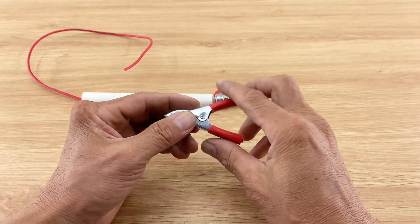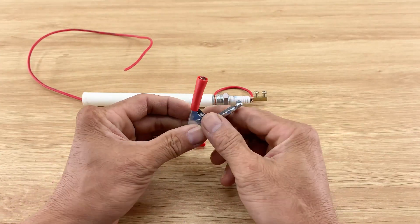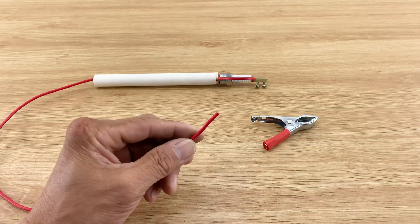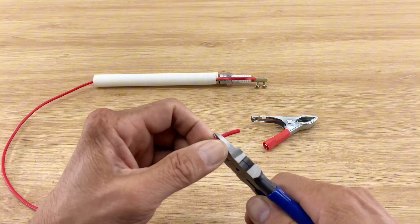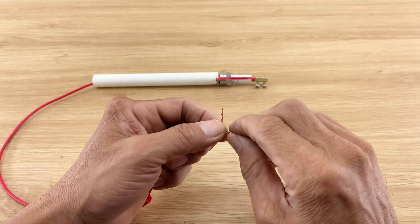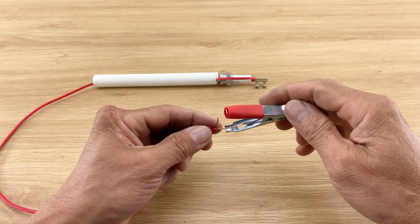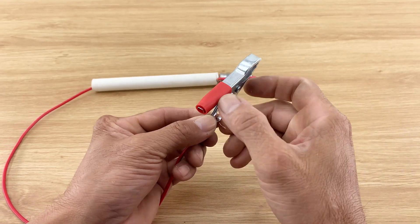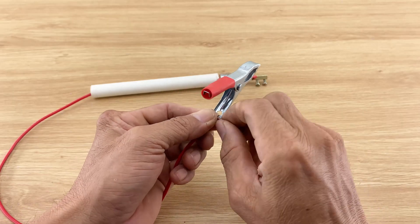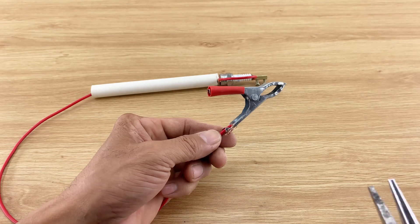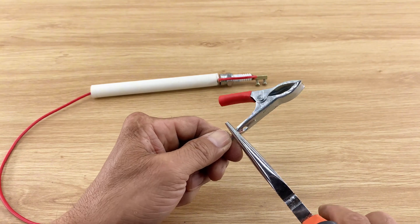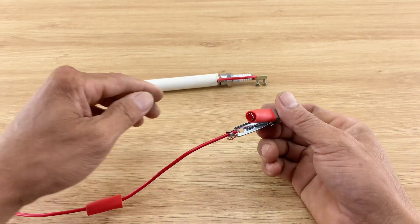Now, for the electrical connections, I prepare a red alligator clip by stripping a portion of its wire and securely twisting it onto the end of the red wire attached to the spark plug. I ensure this connection is strong and well insulated for safety and efficiency. This will be our positive lead.